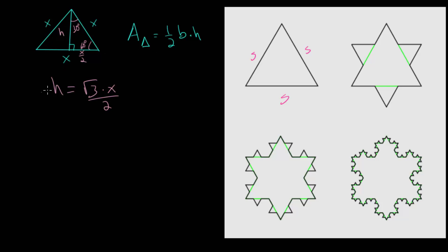But since we have the height we can plug that into our formula and determine that the area of this equilateral triangle is one-half the base, which is X, multiplied by the height, which is the square root of 3 multiplied by X over 2.